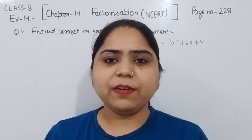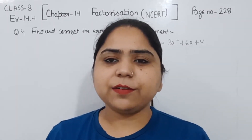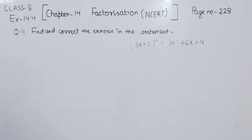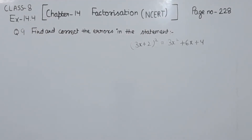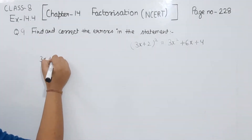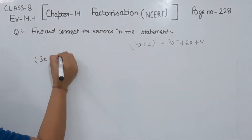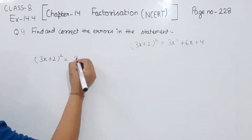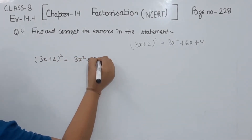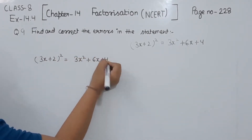Hello everyone, this is Preeti. We are with you for another question of exercise 14.4, page number 228, question number 9: find and correct the error in the statement. So first of all we are going to write the statement: 3x plus 2, whole square, equal to 3x square plus 6x plus 4.